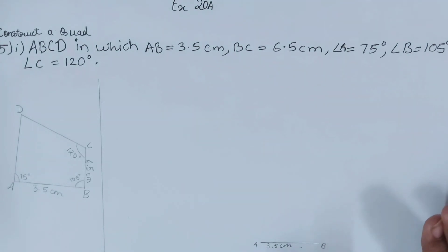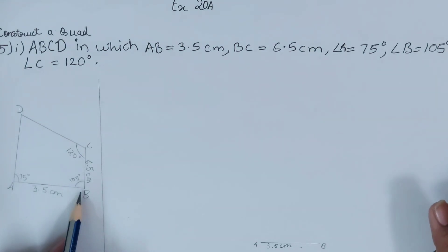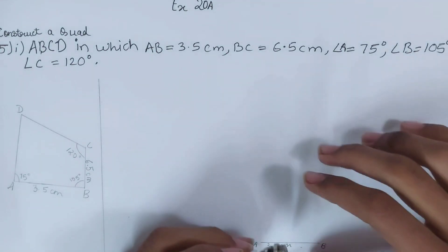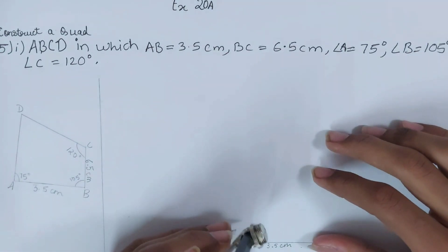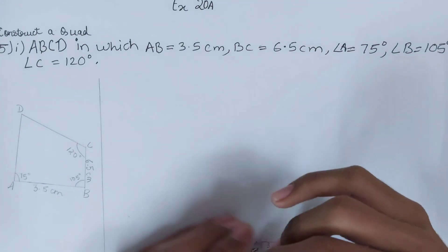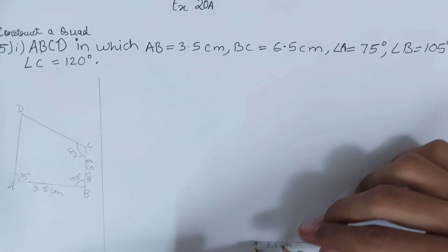From point A we have to make an angle of 75° and from point B we have to make an angle of 105°. Both of these are pretty complicated, so there are chances you might make some errors — be careful. Take your compass and keep it at point A.